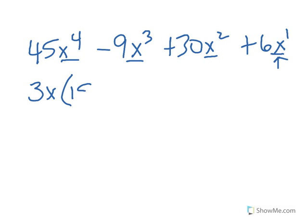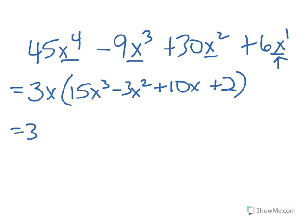45 divided by 3 is 15, and x to the fourth divided by x is x cubed. Negative 9 divided by 3 is negative 3, and x cubed divided by x is x squared. 30 divided by 3 is 10, and x squared divided by x is x. 6 divided by 3 is 2, and x divided by x is 1, so we don't have to write it. These smaller numbers are much better to work with. The only thing you have to watch out for now—don't want to forget to keep writing 3x every time all the way down.